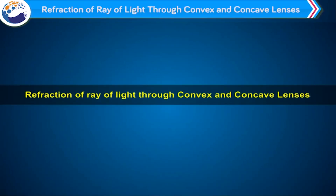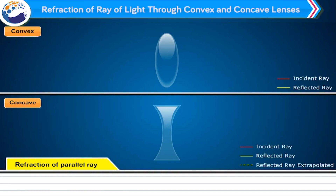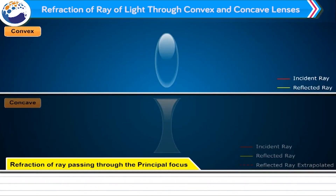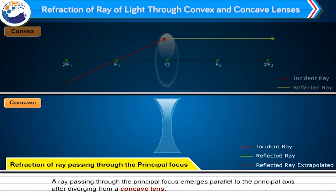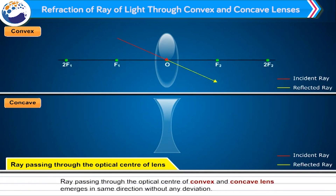Refraction of a ray of light through convex and concave lenses: A parallel ray converges at the focus of a convex lens and diverges from the focus of a concave lens. A ray passing through the principal focus emerges parallel to the principal axis after diverging from a concave lens. A ray passing through the optical center of convex and concave lenses emerges in the same direction without any deviation.